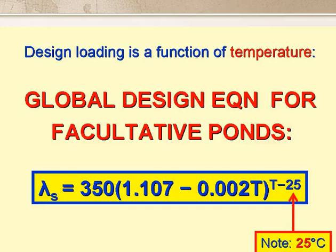The value of lambda s that we use depends on the design temperature, as given by this global design equation. This is based on a value of 350 kilos per hectare per day at 25 degrees, from our experience in northeast Brazil, 80 kilos per hectare per day at 8 degrees and below, from experience in winter in the UK, France and New Zealand, and on an arbitrary value of 500 kilos per hectare per day at 35 degrees.